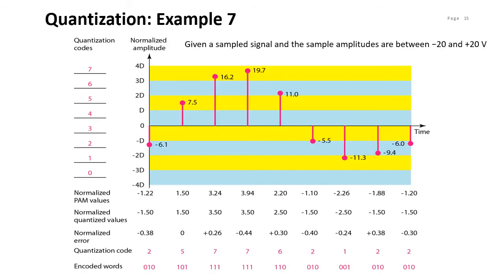Here is an example of quantization. The sample amplitudes are between -20 V and +20 V, so Vmin = -20 and Vmax = +20 V. We divide the range into L zones — in this case we decide to have 8 levels, so L = 8. We calculate delta as (Vmax - Vmin) / L, substituting the values to get delta = 5 volts. So each zone has a height of 5 volts. For example, an amplitude of 7.5 V is in the second zone because it is greater than 5 volts but less than 10 volts.